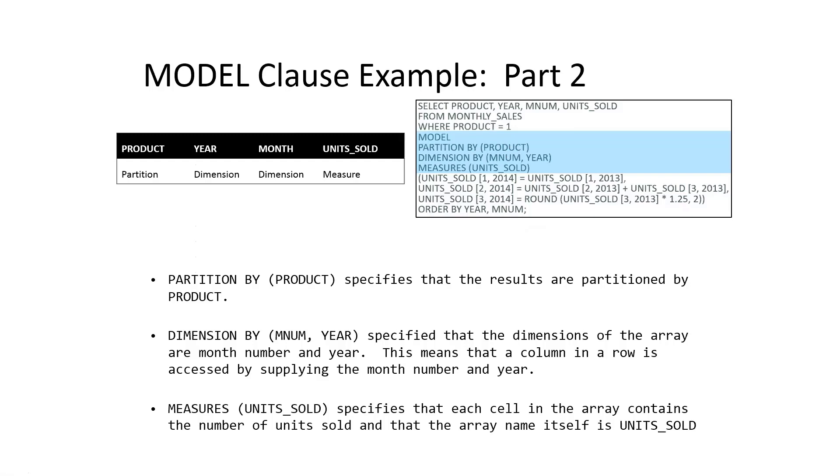The dimensions which we are going to use to try to predict some measure are the month number and the year. And then the measure that we are going to be predicting based on month and year is units sold. So these are the three elements of the model.